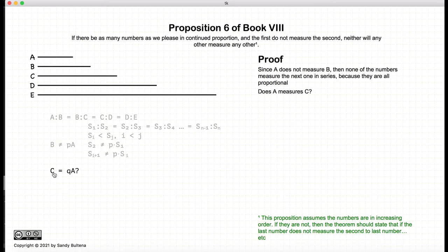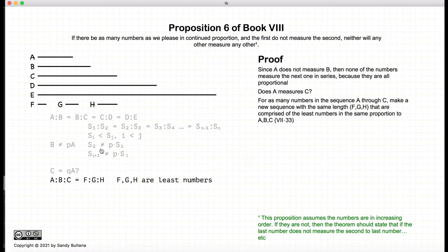But does A measure C? Can we sort of skip one and say, does A measure C? So let's look at that possibility. Let's take A, B, and C and find the least numbers F, G, and H using Proposition 33 of Book 7. So remember F, G, and H are the smallest numbers that can be used to express the continuous ratio of A, B, and C.